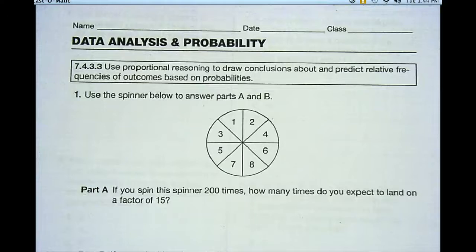Okay Oak Grovers, this is a video on Math Standard 7.4.3.3 on your MCA-3 test prep packet, and the standard reads like this. Use proportional reasoning to draw conclusions about and predict relative frequencies of outcomes based on probabilities.